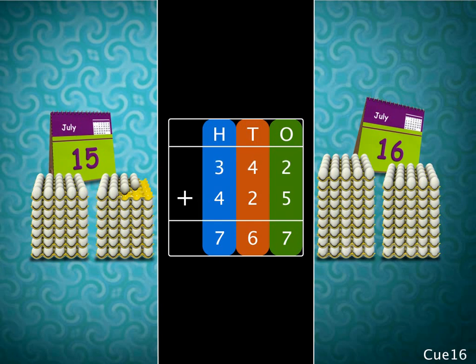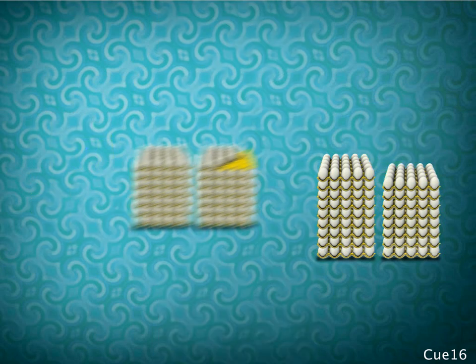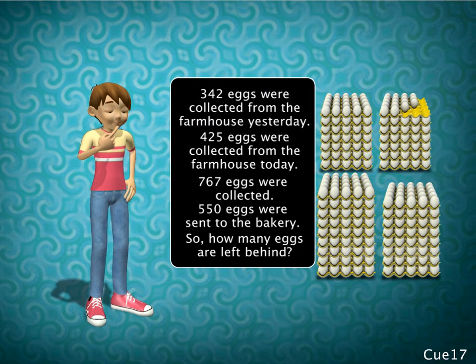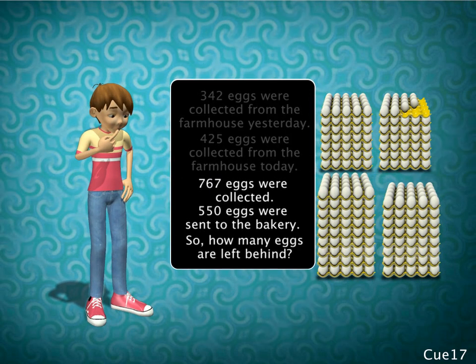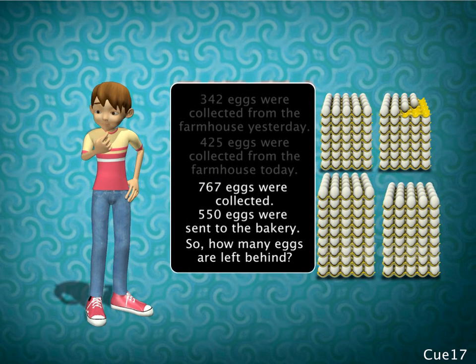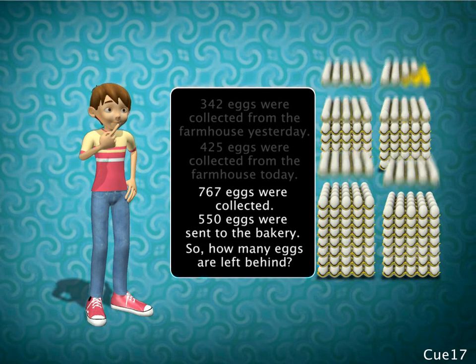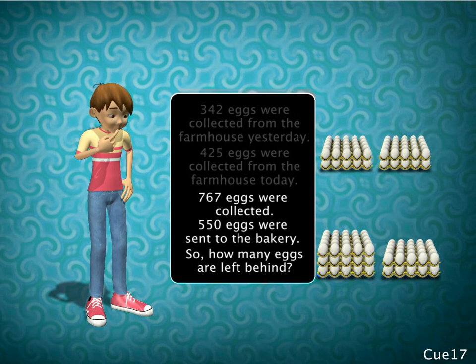Adding 342 and 425, we get 767. So the total number of eggs collected was 767. Now let's come to the second part of the problem. We know that 767 eggs were collected, out of which 550 were sent to the bakery.